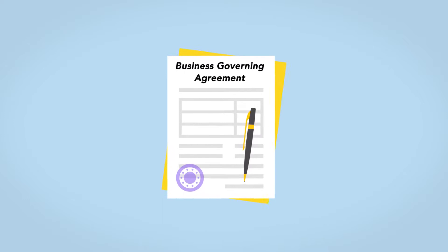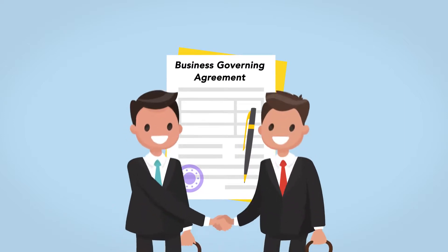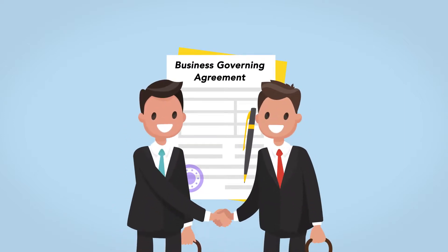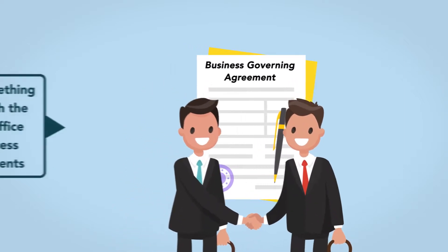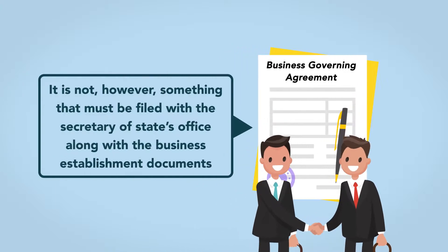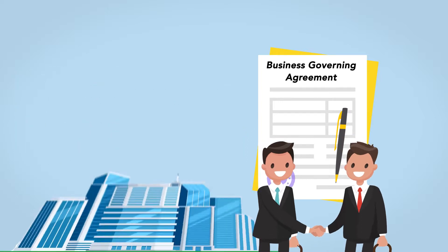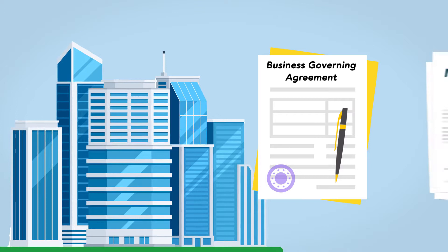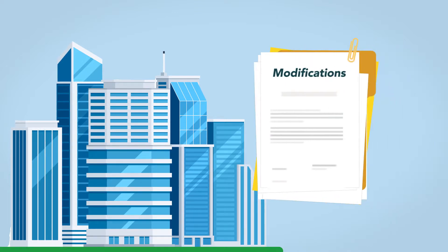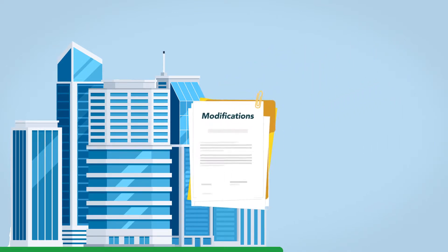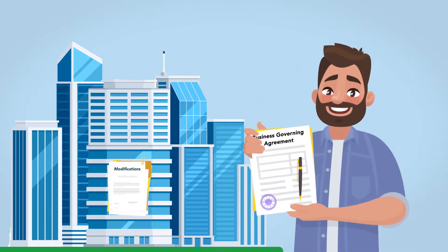The business governing agreement is a legal document—a contract that's binding on its parties. It is not, however, something that must be filed with the Secretary of State's office along with the business establishment documents like the Articles of Incorporation. The company should keep its governing agreement, along with any modifications to it, on file at the company's place of business for quick access by anyone who needs it.